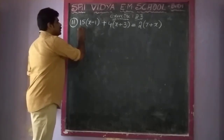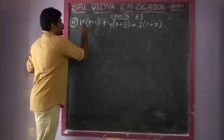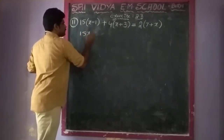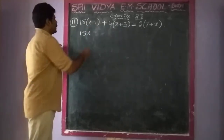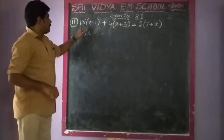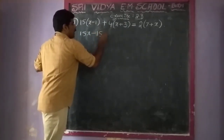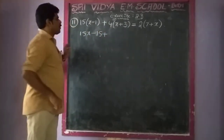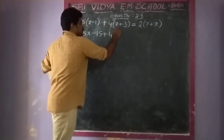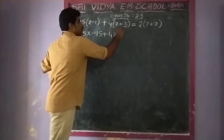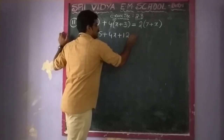So, first using distributive property for this: 15 into x gives 15x, and 15 into 1 gives 15. Write minus, so minus 15. Then plus 4 into x gives 4x, plus 4 into 3 gives 12. Is equal to.